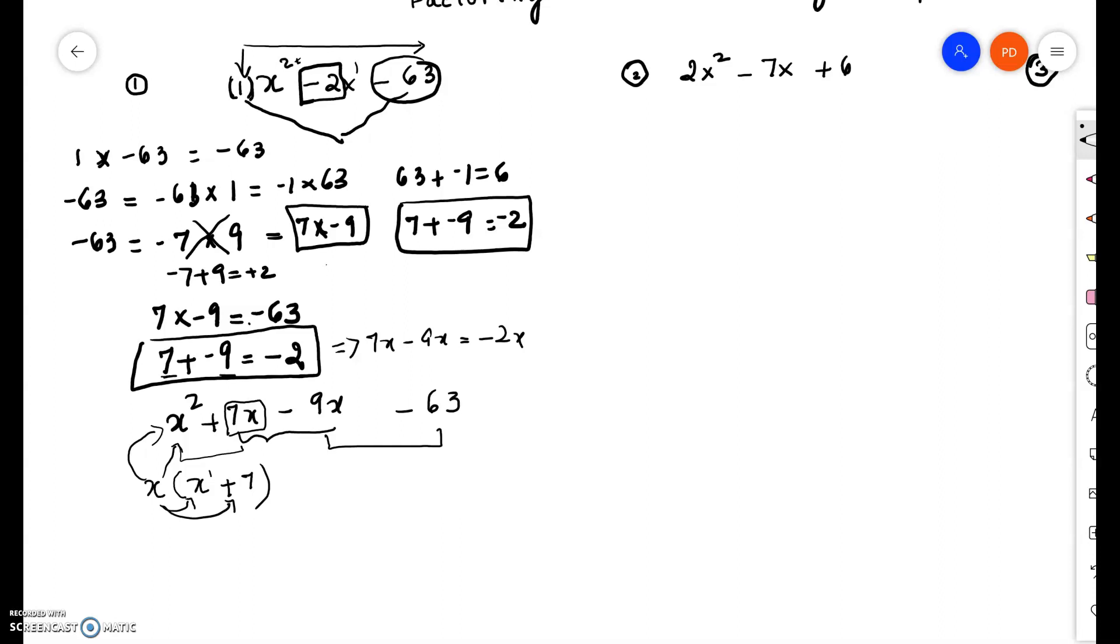So what we are doing is the opposite, which is factoring. Now a common factor between negative 9x and negative 63 is negative 9. I am taking a negative 9, so that way when I factor out the negative 9 from negative 9x, I am left with an x. And when I factor out a negative 9 from a negative 63, I am left with a positive 7.